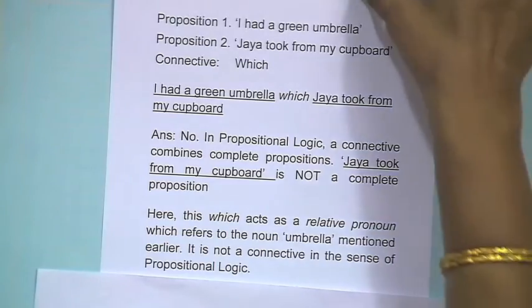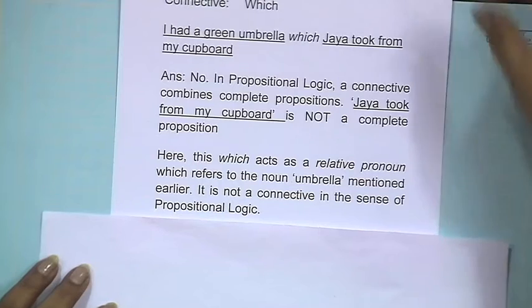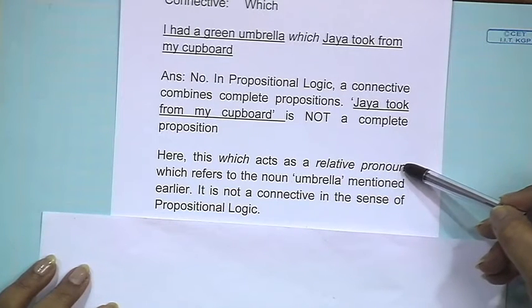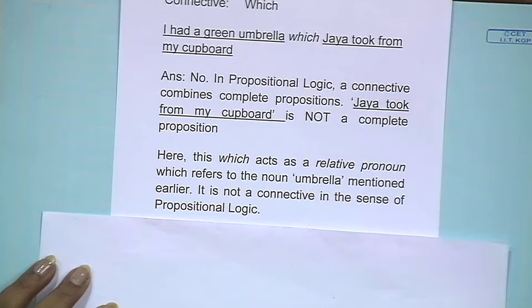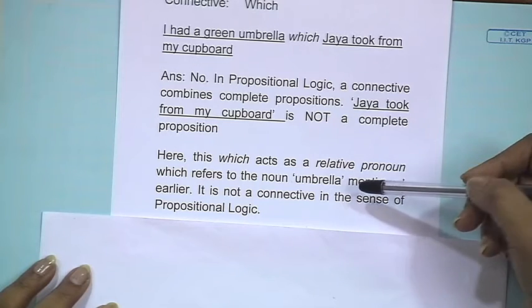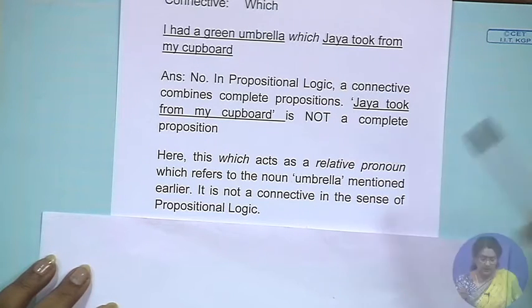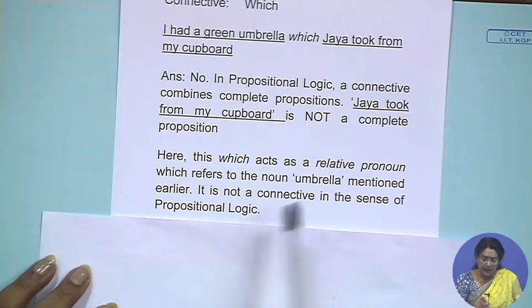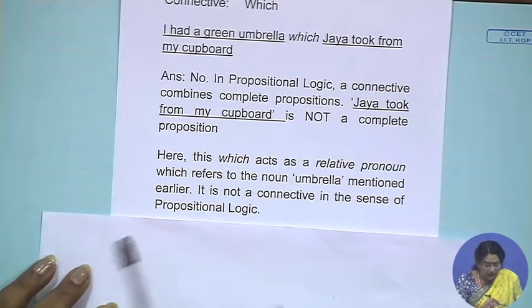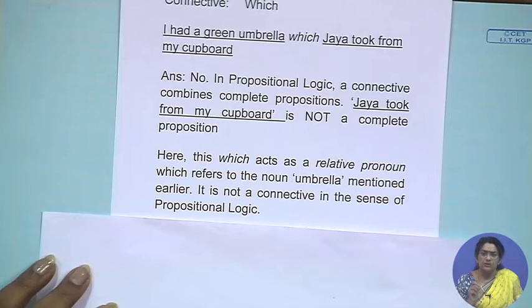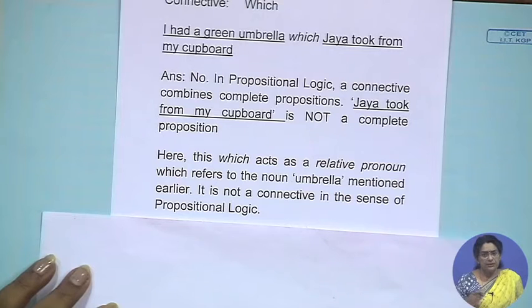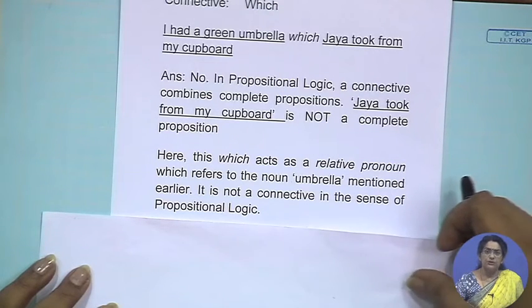What then is this 'which'? Its function is as a relative pronoun — a relative pronoun which refers to a noun previously used in the sentence, in this case the umbrella. 'I had a green umbrella which Jaya took from my cupboard' — the noun 'umbrella' is referred to by 'which.' My point is that it is not a connective in the sense in which propositional logic connectives work. With that introduction, let us go into the proper discussion of the propositional logic connectives.